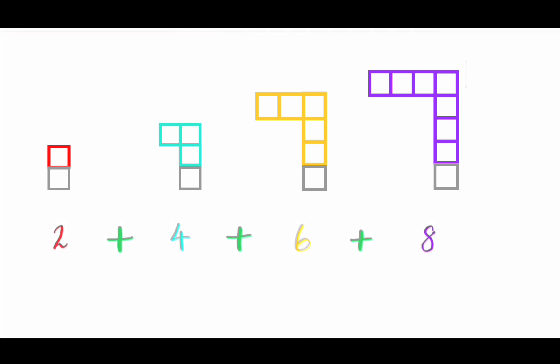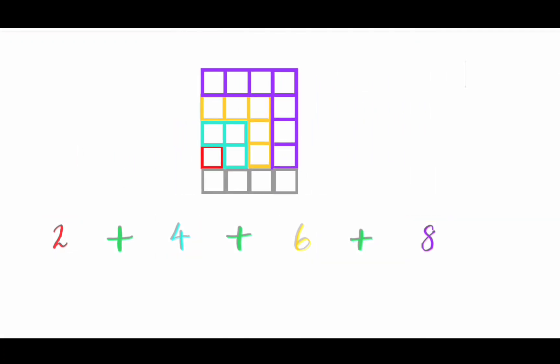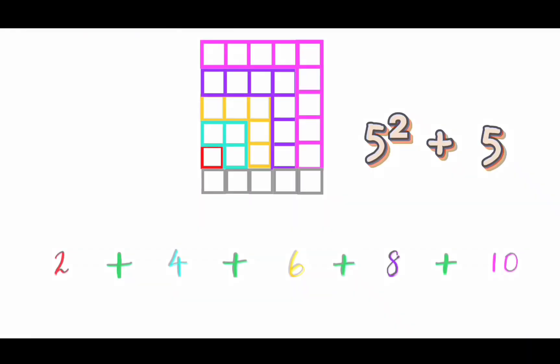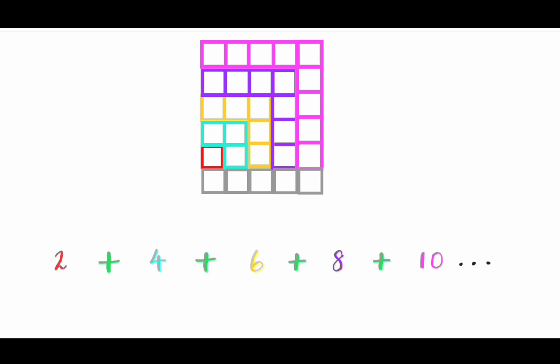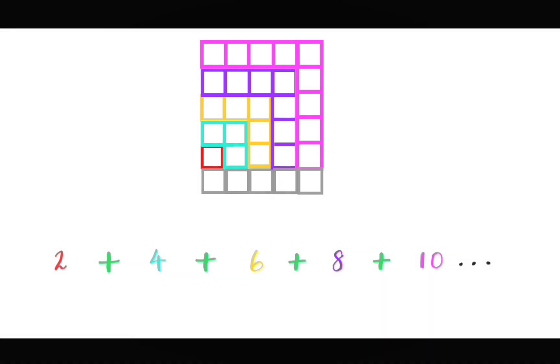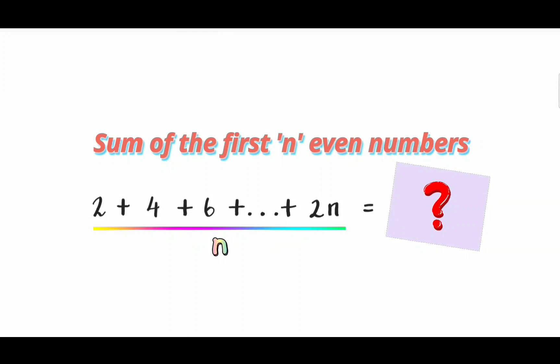Similarly, if we add first 4 even numbers, we get 4 square plus 4 blocks. And also for 5 even numbers. And so on. So what is the sum of the first n even numbers? I hope you guessed that. Yes, n square plus n.